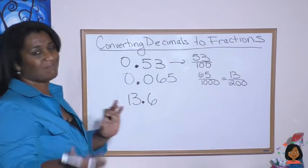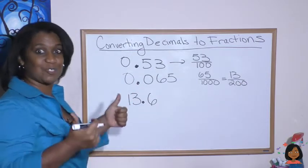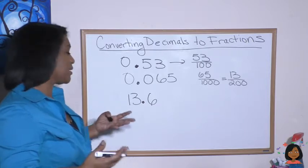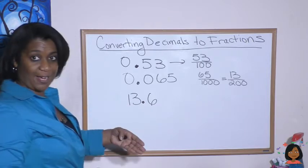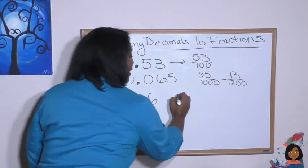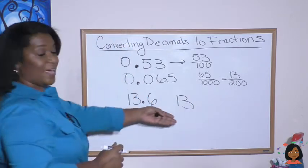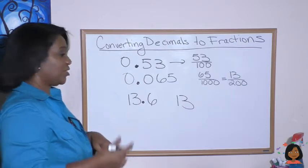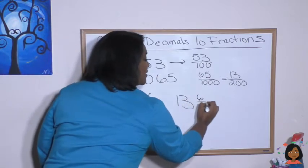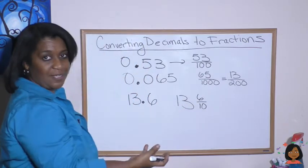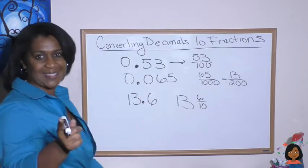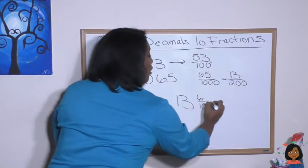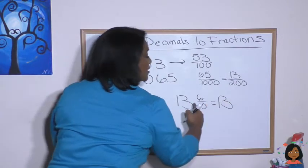How about this one? We have a mixed number—a whole number and a fraction. We keep the 13 as the whole number, but now we look at the decimal piece and turn that into a fraction: 13 and 6/10, since the 6 is in the tenths place. But 6/10 can be simplified by dividing by 2, so 13 and 6/10 is the same as 13 and 3/5.